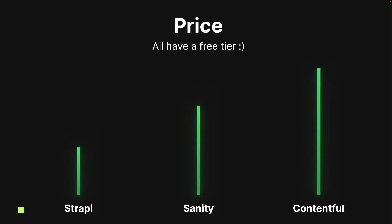For pricing, all three get a green rating from me because they all have a free tier. Strapi is the most modest — you won't really ever need the paid option for basic purposes. Same for Sanity and Contentful. Sanity and Contentful offer their own CDNs, while with Strapi you just host on your own — the only real cost with Strapi is your server hosting. Contentful does have quite high pricing for teams — around $499 — compared to around $49 for Sanity. So for teams, Contentful is more expensive, but for basic personal use, they're all essentially free.